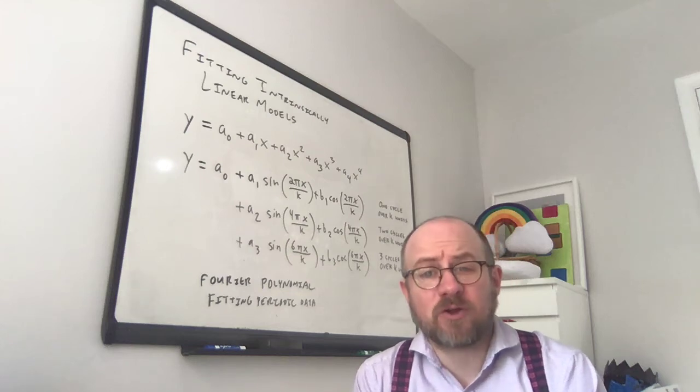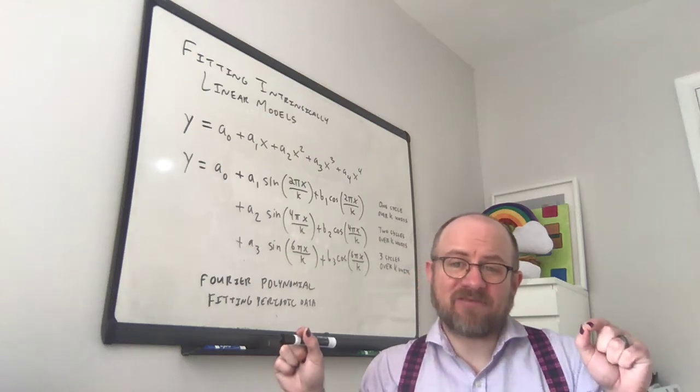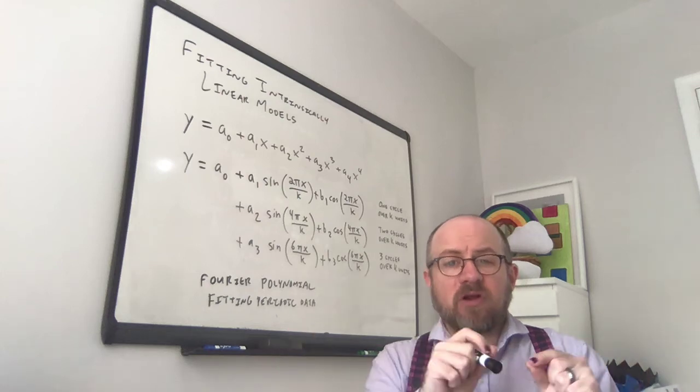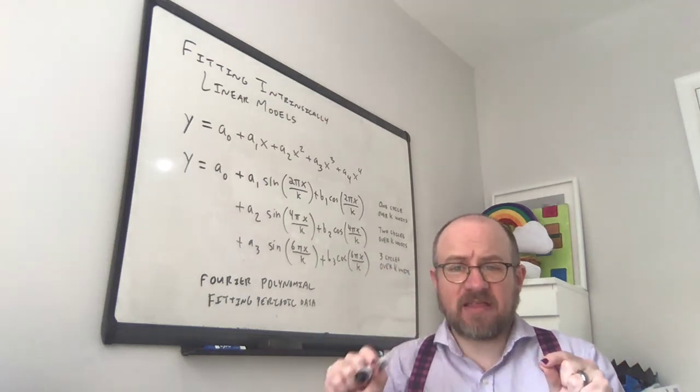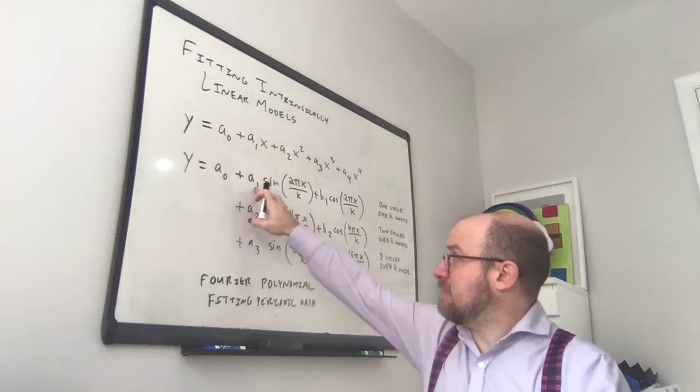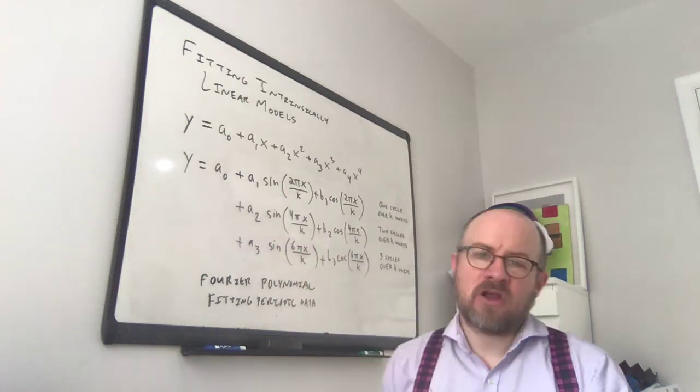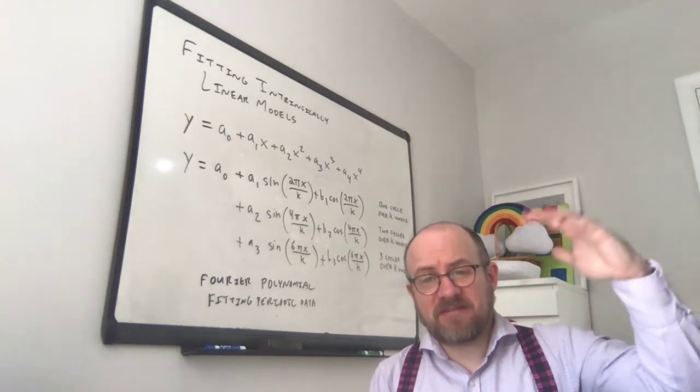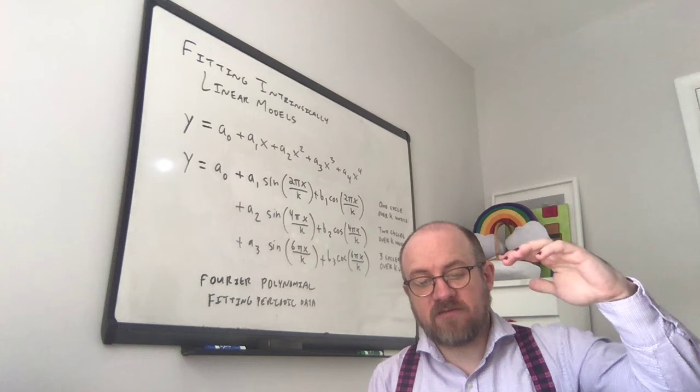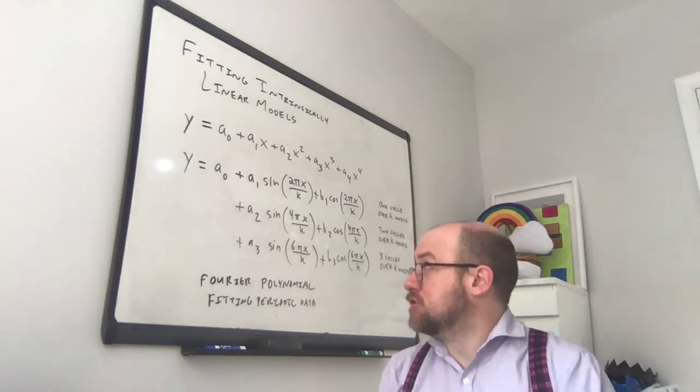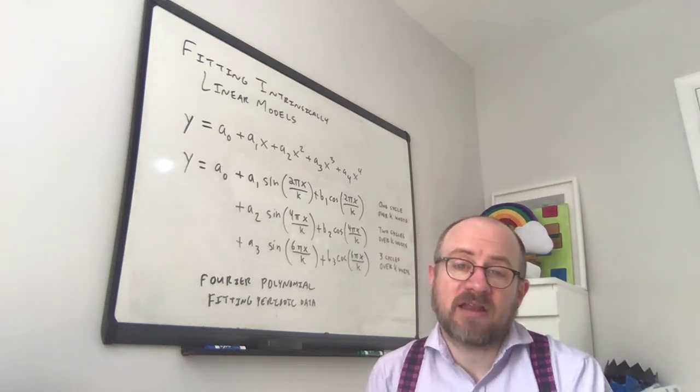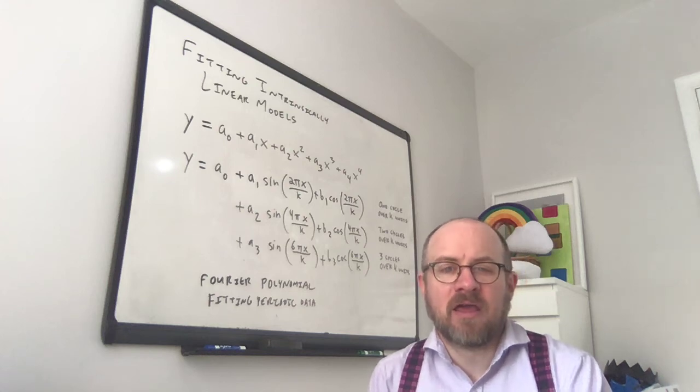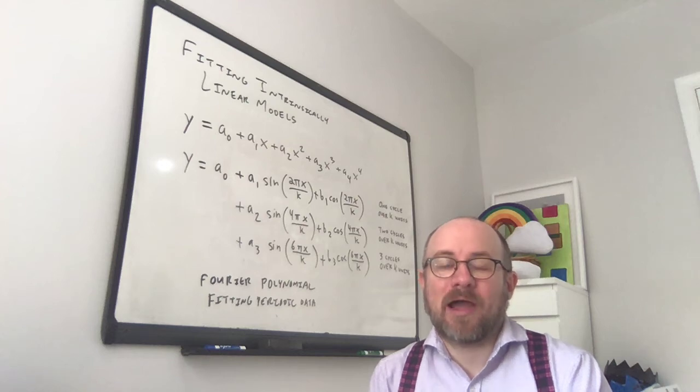And so all of these are good models for anything that's repeating every k units, because what they're going to do is they're going to fill in different pieces. This A1, B1, A2, B2, A3, B3 are going to change the amplitude. And so you can actually get very sophisticated kinds of graphs of periodic data just from this kind of approximation. And we'll see that when we go to Excel. It's actually kind of amazing how quickly it approaches the actual data.